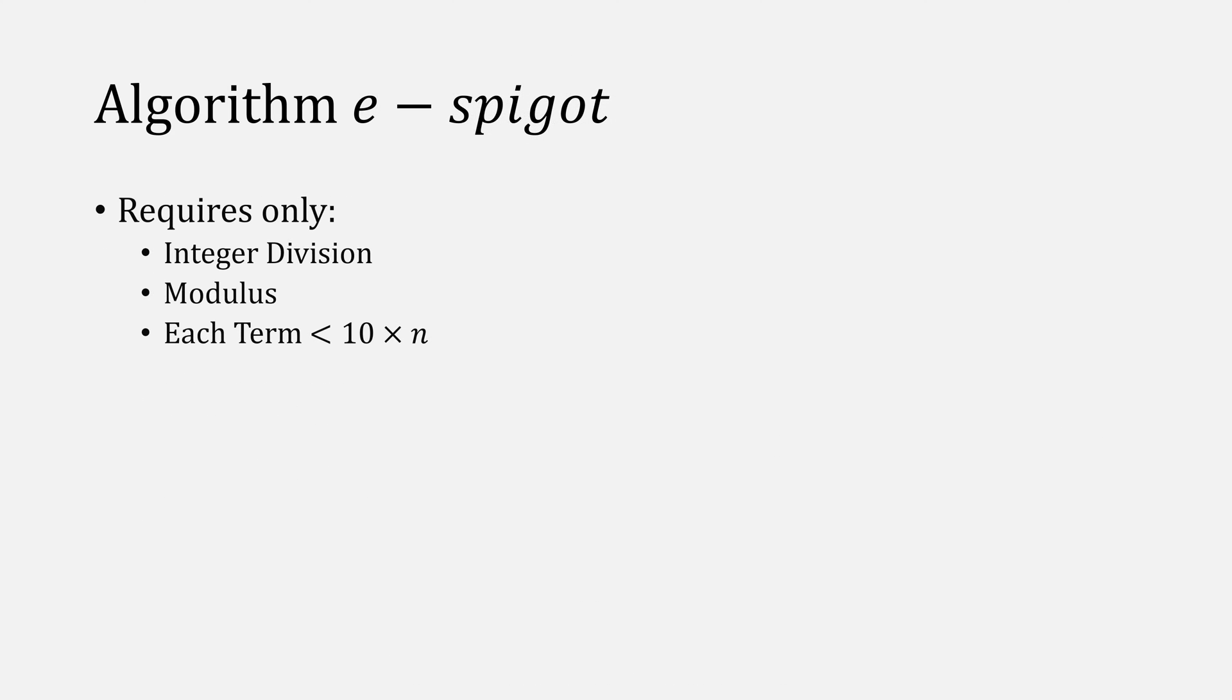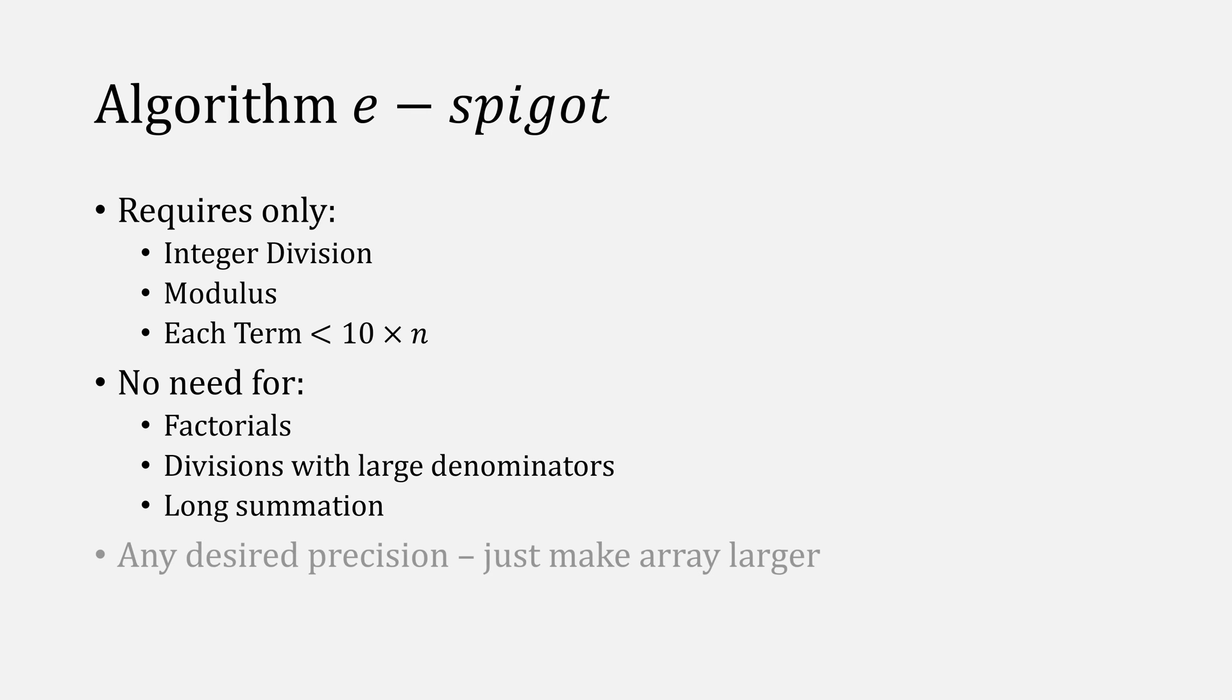The great thing about e-spigot is that it only requires some integer division and modulus, and none of our terms actually ever get very large. There's also no need for factorials or doing very large divisions or having this giant summation, and you can compute it to any desired precision. All you need to do is just make your array larger.